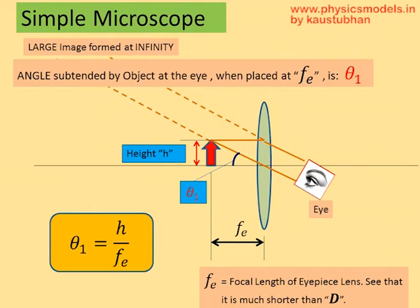We move the arrow towards the convex lens and station it at a distance Fe from the convex lens. Fe, incidentally, is the focal length of the eyepiece. E stands for eyepiece. Since the object now is exactly at the focal length of this convex lens, the rays coming out from the convex lens after refraction are parallel.